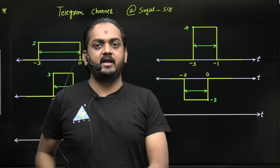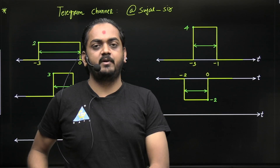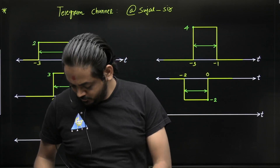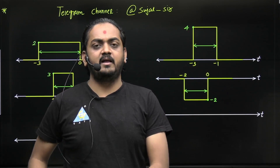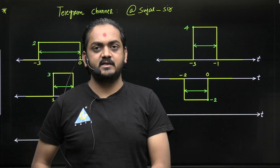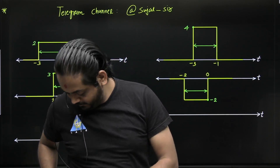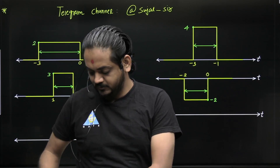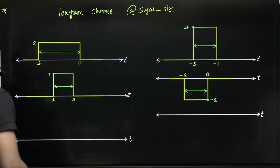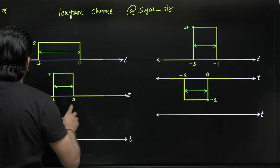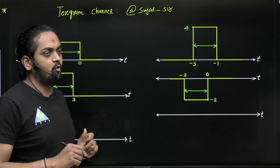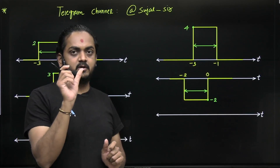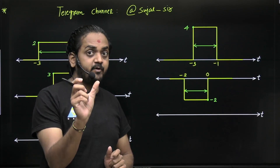Hello dear students. In this video I will explain convolution between two equal length pulses and two unequal length pulses. So first of all you have to observe the pulse width of both the signals.